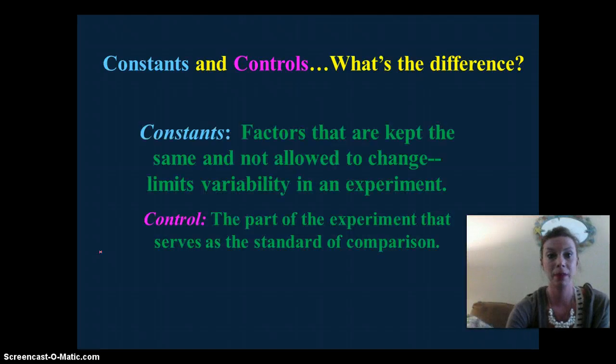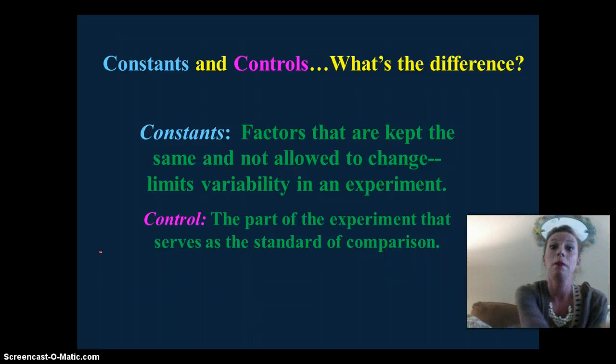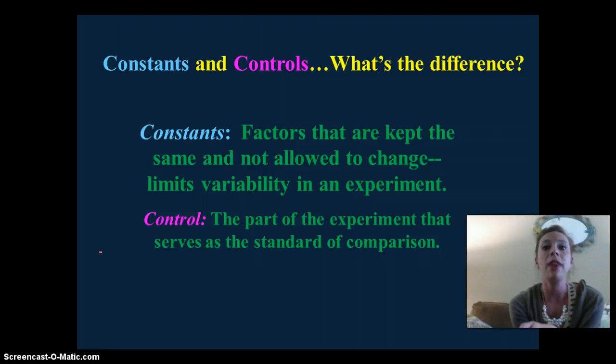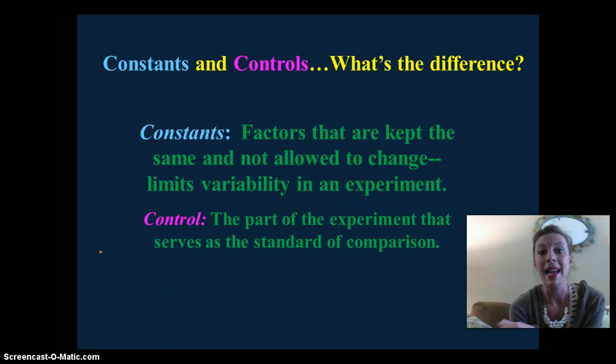Okay, constants, controls, what's the difference? A constant is going to be factors that remain the same, and they're not allowed to change in the experiment. They're going to limit the variability in the experiment. The control is a part of the experiment that serves as a standard for comparison. So, if we use the fertilizer and how it affects the growth of plants, the control would be the plant that did not receive any fertilizer. The experimental groups would be the plants that got different amounts of fertilizer. The dependent variable would be the growth. And the constants would be factors that have to remain the same between all groups. So, it would be the type of plant, the amount of sunlight, the amount of water, the temperature. So, all the different variables or factors that could affect the growth of the plant.